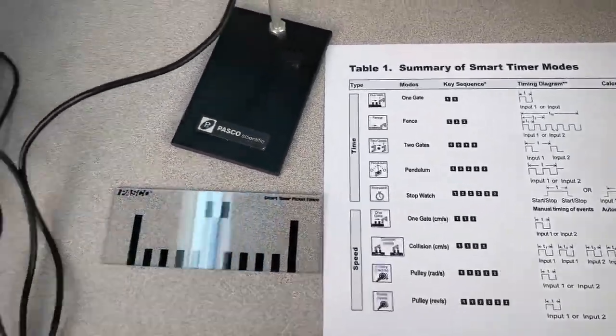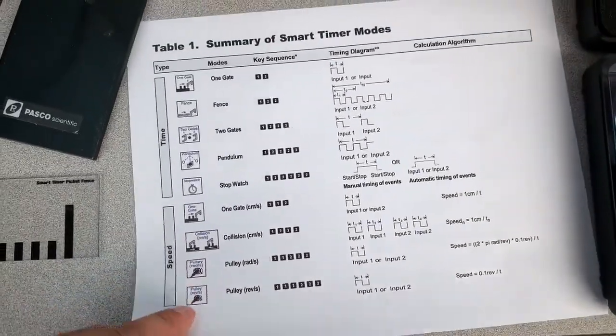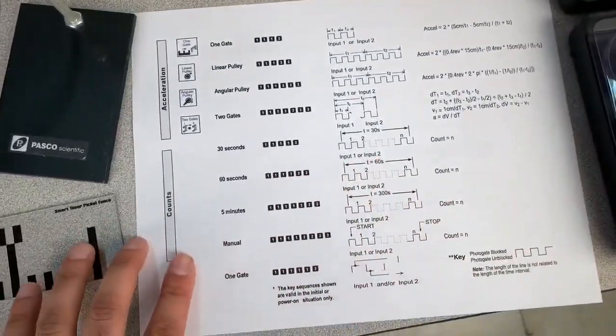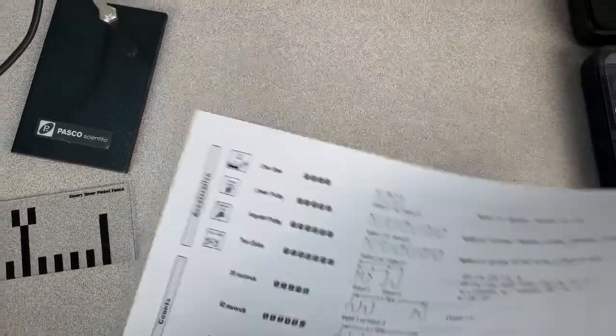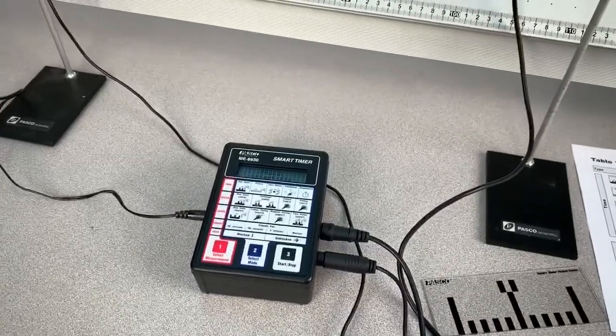The picket fences are the best way to use the different modes to get the most accurate values. From the instruction guide from the smart timer that you can get from Pasco's website, I printed this page and it's just a quick summary that shows the different modes and how they work. Let's run through a few of these examples.